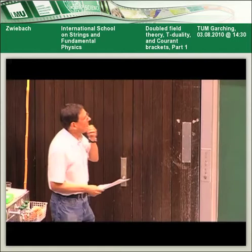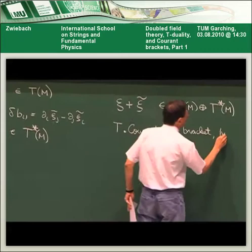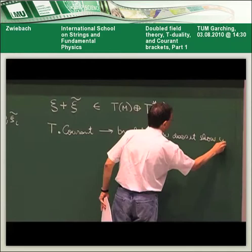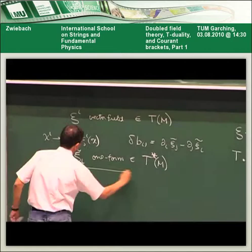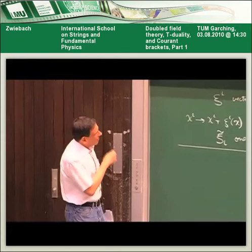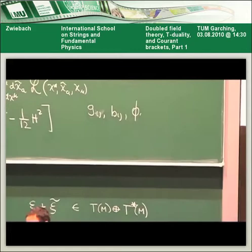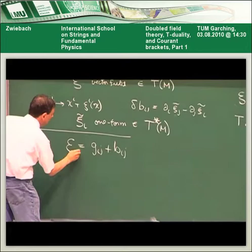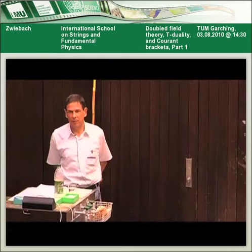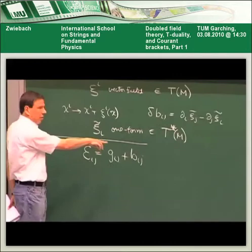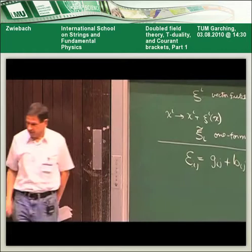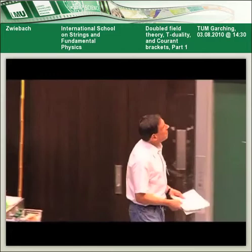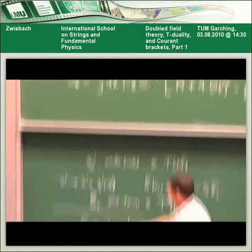Other interesting things: in string theory, the metric and the antisymmetric tensor always come together. In fact, it's very natural in string theory to combine the metric and the antisymmetric tensor to form a matrix field E_{ij} that is neither symmetric nor antisymmetric — this is extremely natural. Nevertheless, even though it's so natural in string theory, there's no familiar action written nicely in terms of E_{ij}. You could certainly write it in terms of E_{ij} by taking the symmetric and antisymmetric parts, but it becomes a big mess.